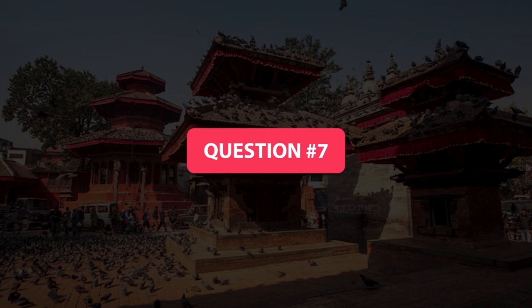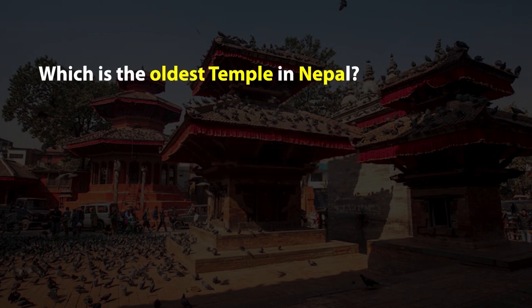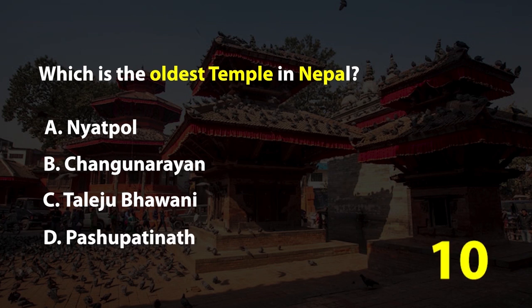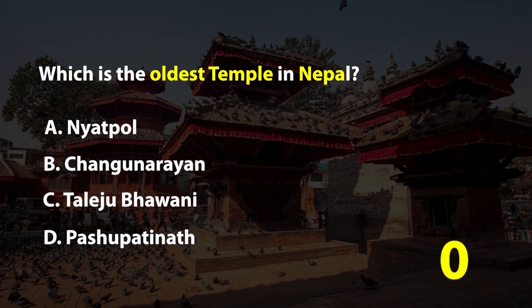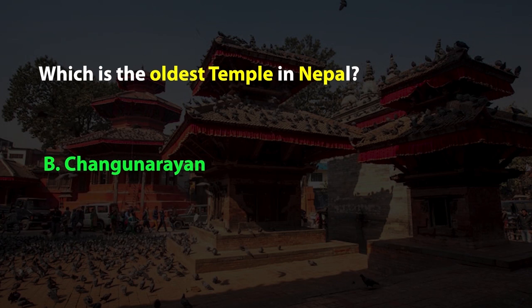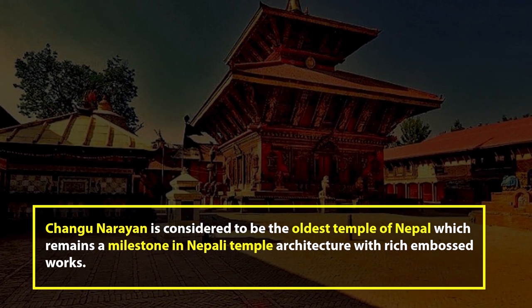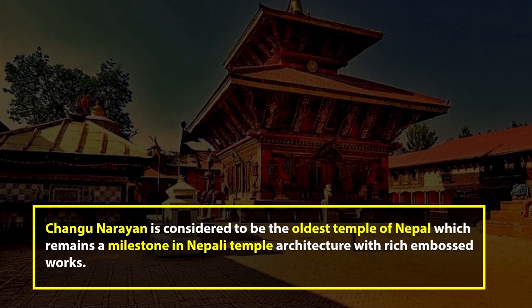Question number 7. Which is the oldest temple in Nepal? A. Nyatpol, B. Changunarayan, C. Taleju Bhawani, or D. Pashupatinath. The right answer is B. Changunarayan is considered to be the oldest temple of Nepal, which remains a milestone in Nepali temple architecture with rich embossed works.